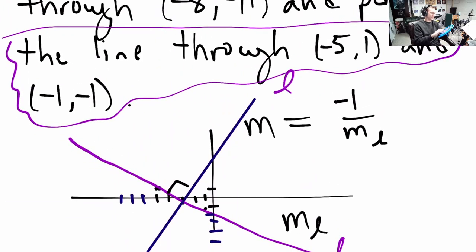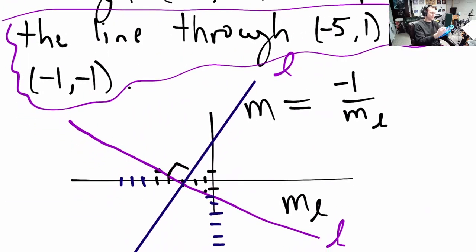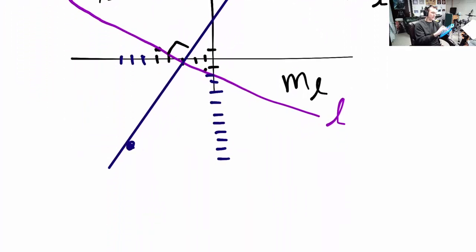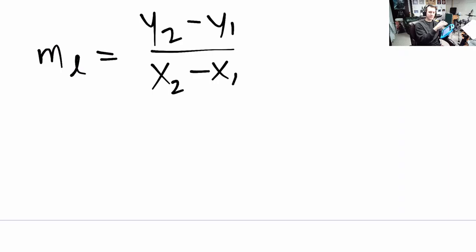I need to know these points. negative 5, 1 that will be our x1, y1 and negative 1, negative 1 will be our x2, y2. So, to compute ML equation of the line L we always do the same thing it's y2, minus y1 that's the rise divided by x2, minus x1 that's the run.